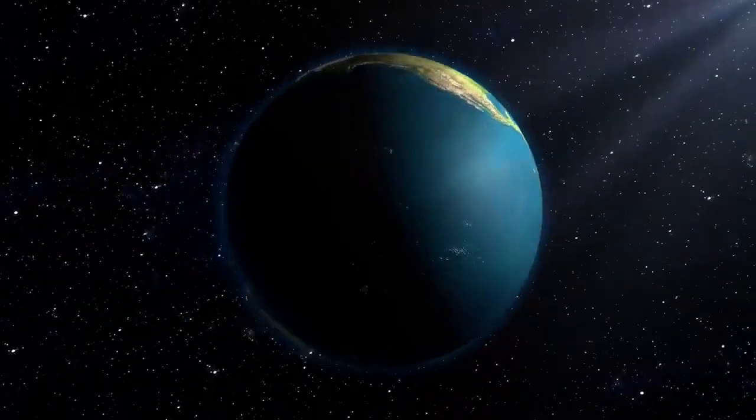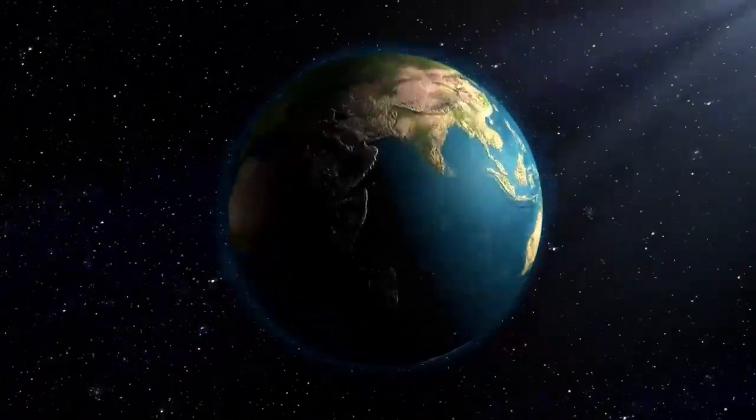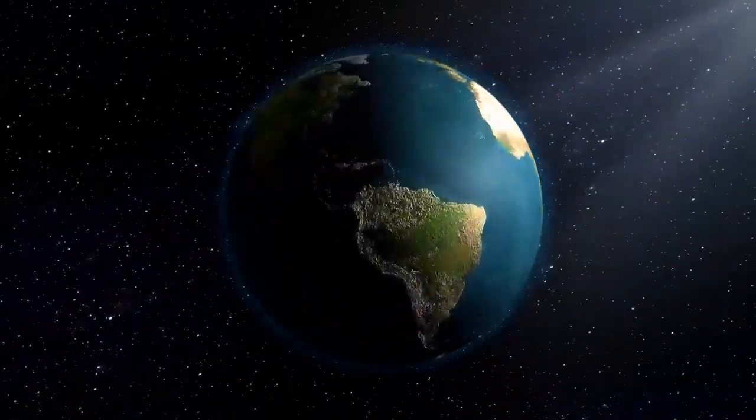If, for example, you wanted to make our sun into a black hole, and please don't, you would have to compress it down to a radius of three kilometers in order to create the required density. For reference, to create the same density out of Earth, you'd have to compress our planet to the size of a garden pea, or something else that's smaller than a centimeter.